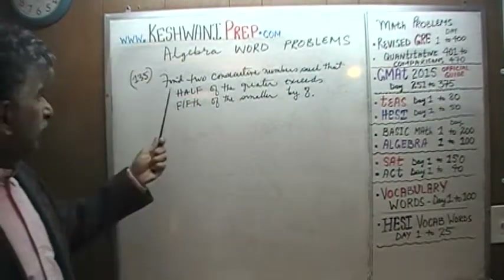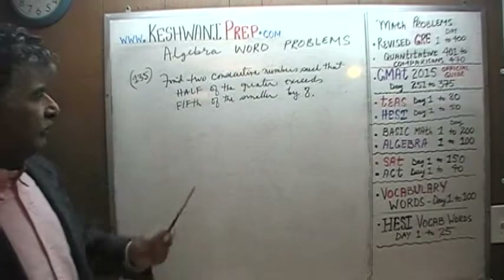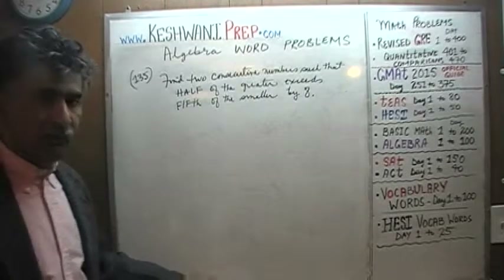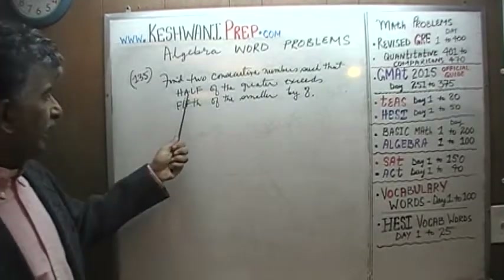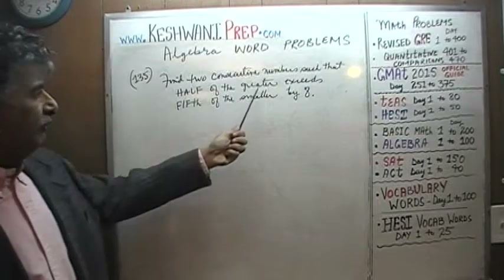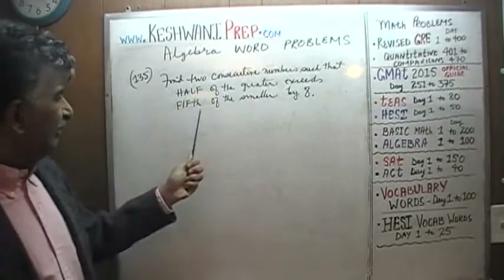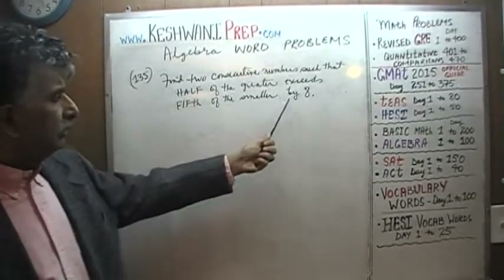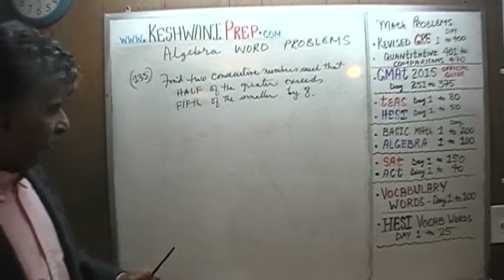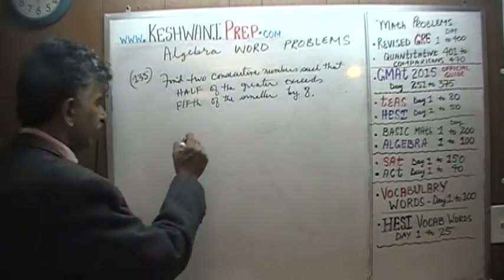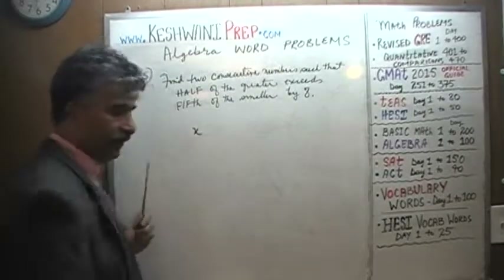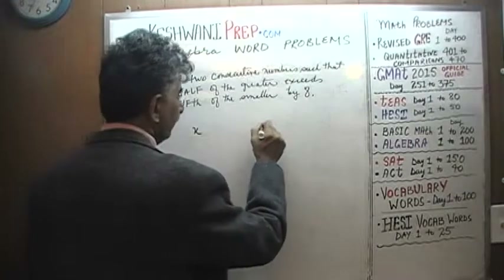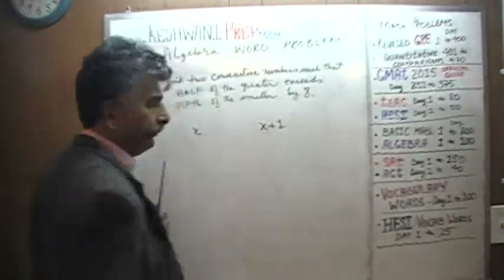Let's take a look at it. It says find two consecutive numbers such that we have to find two consecutive numbers such that half of the greater exceeds the fifth of the smaller by eight. So let's call the first number x, and since they're consecutive, the next one — the larger one — is going to be x plus one.